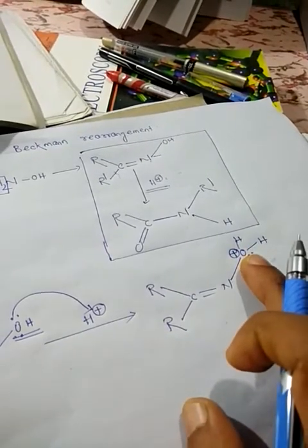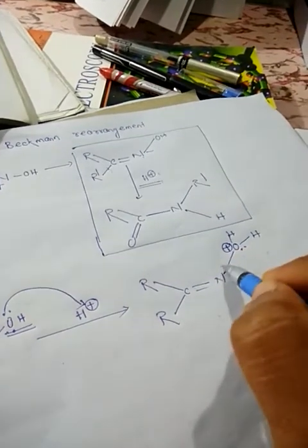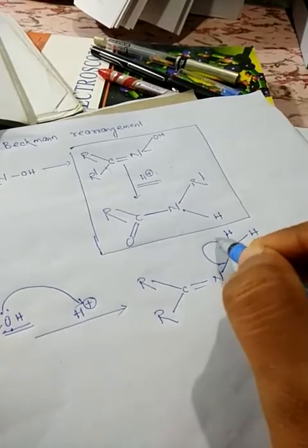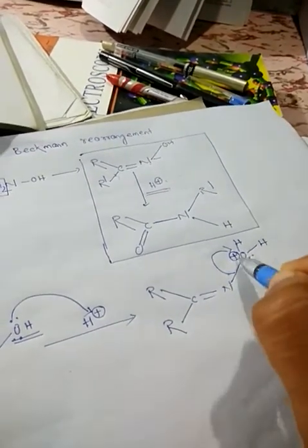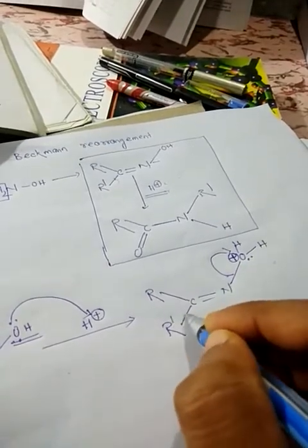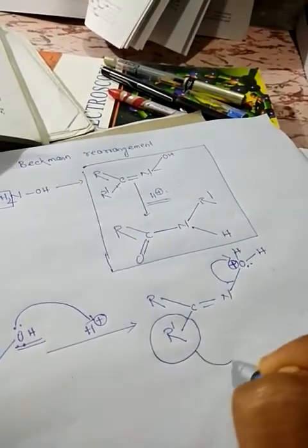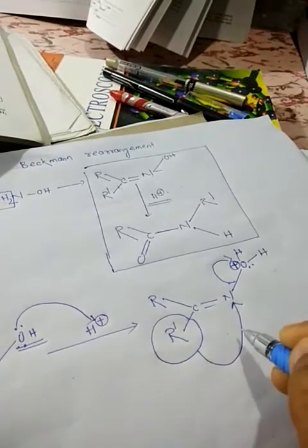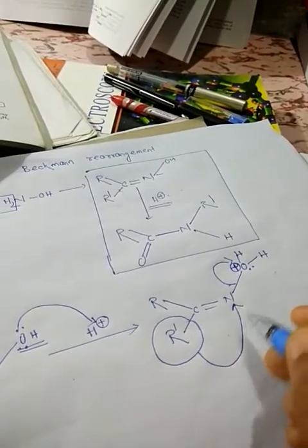This is a better leaving group. Now we have to minimize this positive charge. This bond shifts to this place and one of the alkyl groups with its bond pair goes to the nitrogen atom.